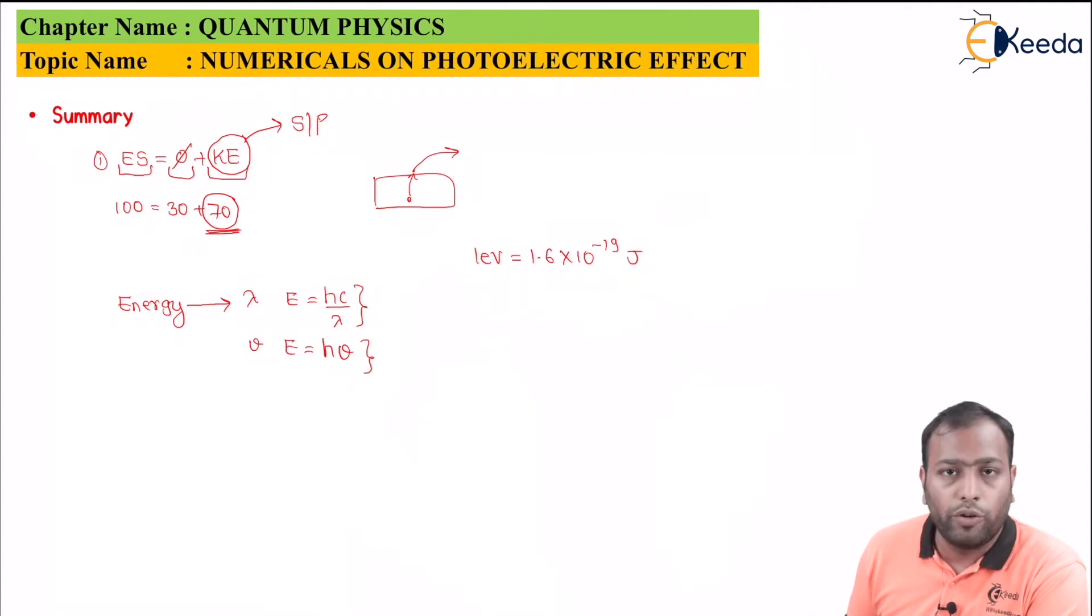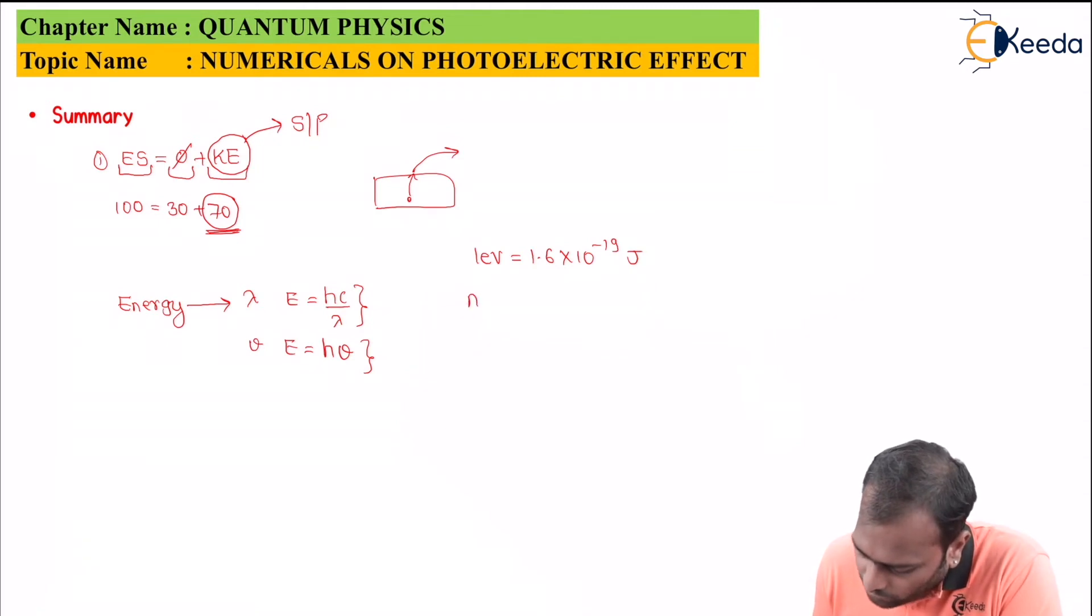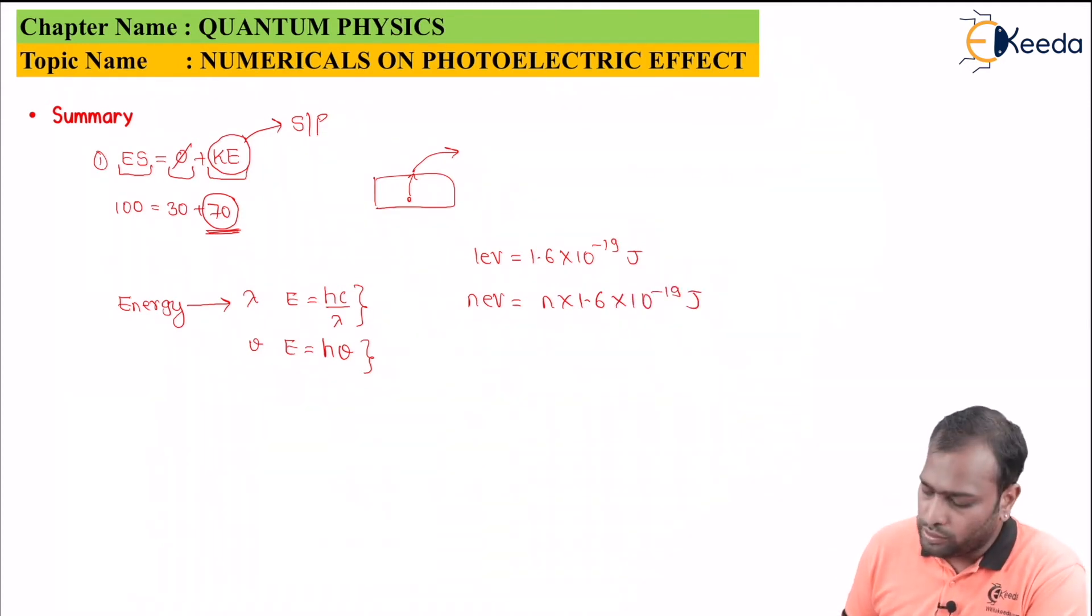So we will be using certain conversions. So do remember this one fact that 1 electron volt equals to 1.6 into 10 to the power minus 19 joules. So basically if I am given some n electron volts it would be equal to n into 1.6 into 10 to the power minus 19 joules. So wherever you are given electron volts just multiply by the factor and wherever you are given energy as joule just divide it by E. So you will be getting energy in terms of electron volts.